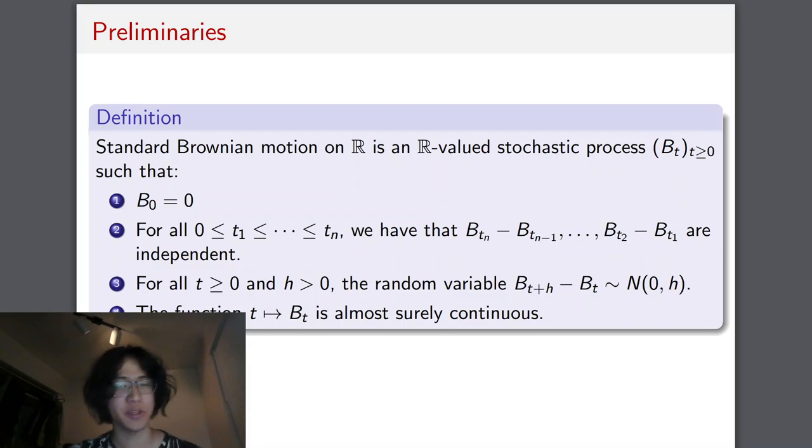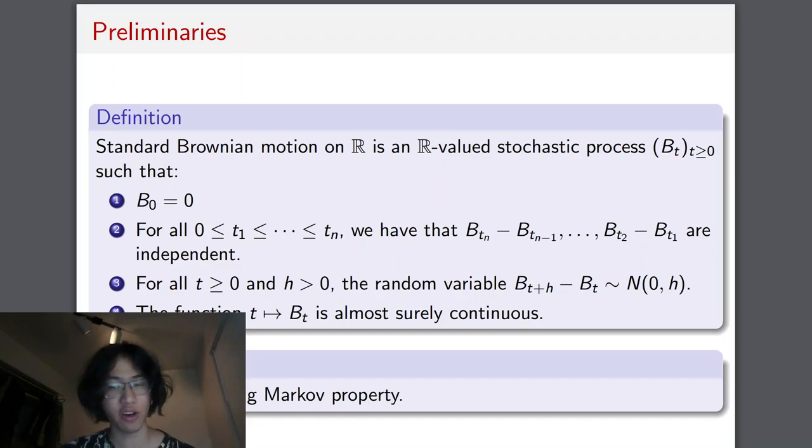Finally, the function that maps t to bt is almost surely continuous, which means it's continuous except on a measure zero set. Now, Brownian motion has the strong Markov property, and intuitively what this means is that the future values of the Brownian motion only depend on what the present value is, and it does not depend on its history.